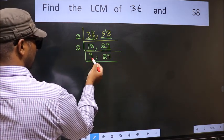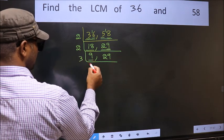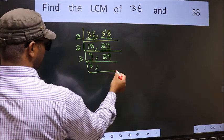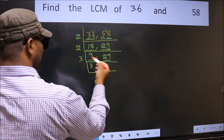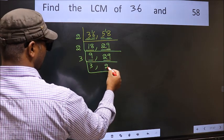Now here we have 9, 9 is 3,3 is 9. The other number 29, not divisible by 3, so we write it down as it is.